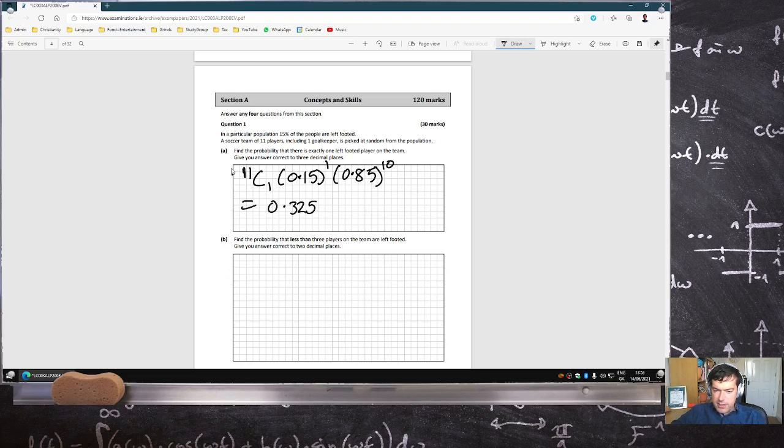Find the probability that less than three players on the team are left-footed. So the probability of having less than three probability would be the probability of zero, one, and two. Now we have the middle one already. That's the previous answer.